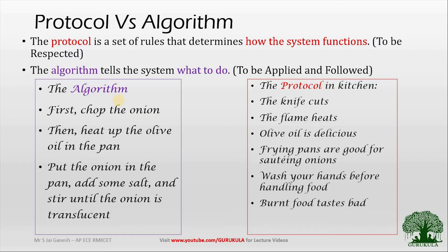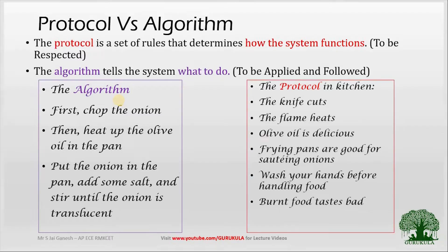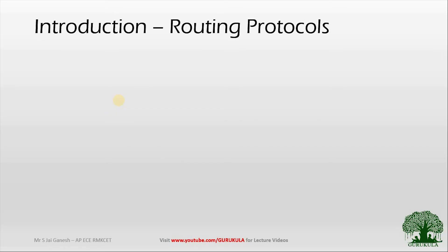Now all viewers should have understood what exactly algorithm and protocol are. Algorithm is a step-by-step procedure you follow to achieve a particular task, and protocol tells you how to do each thing to get an optimum result. When you have an algorithm you will always have an associated protocol with it. Now we will march forward to understand what exactly routing protocols are and why we need them.